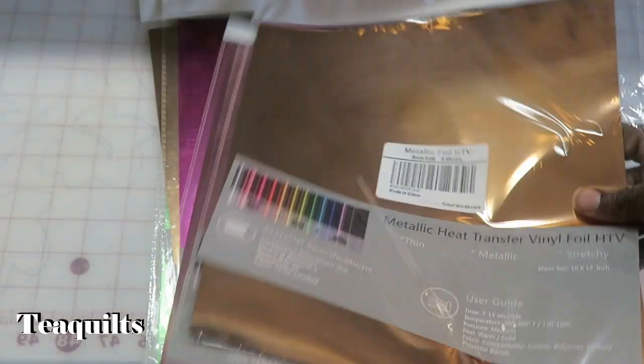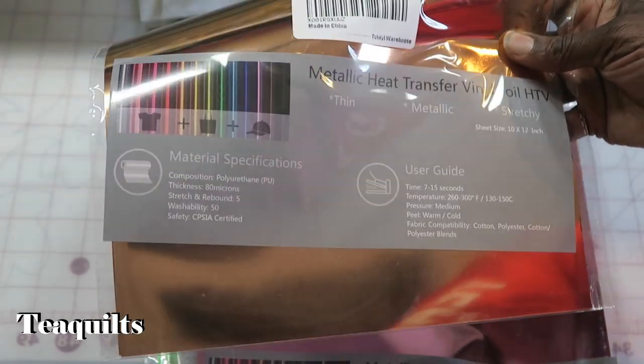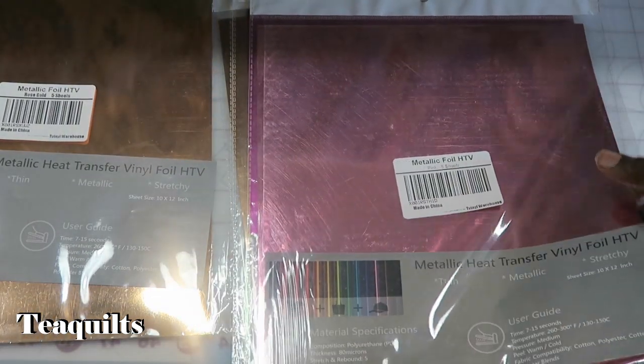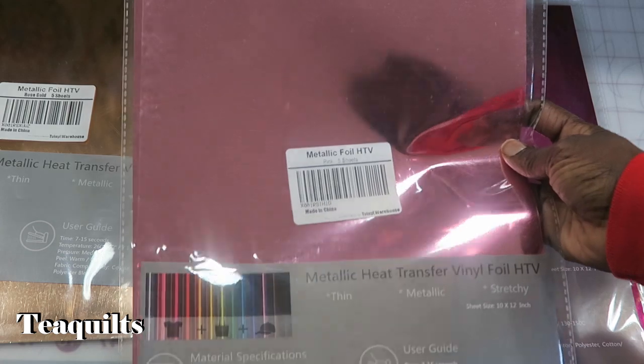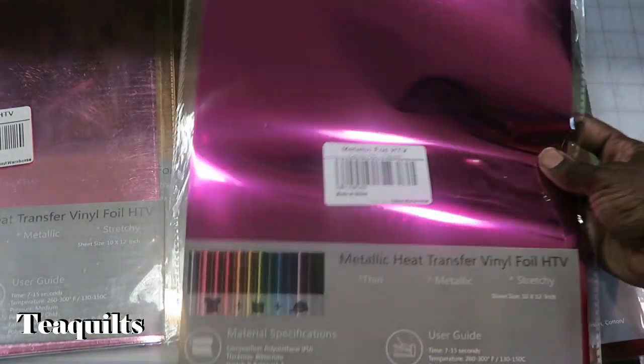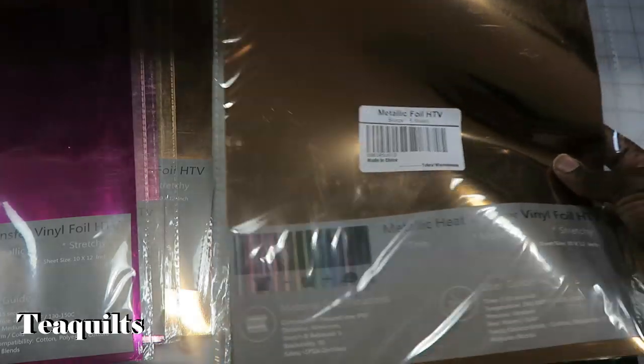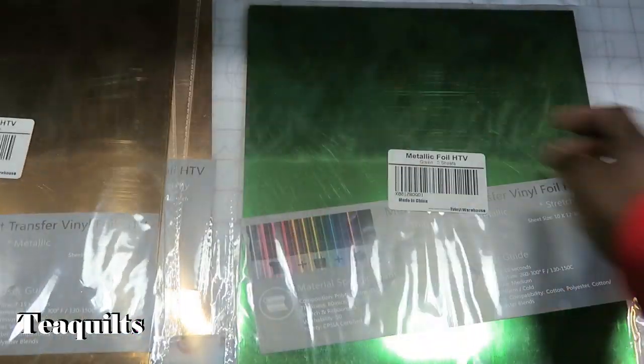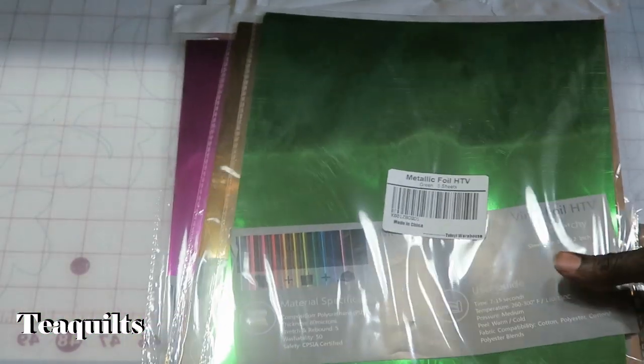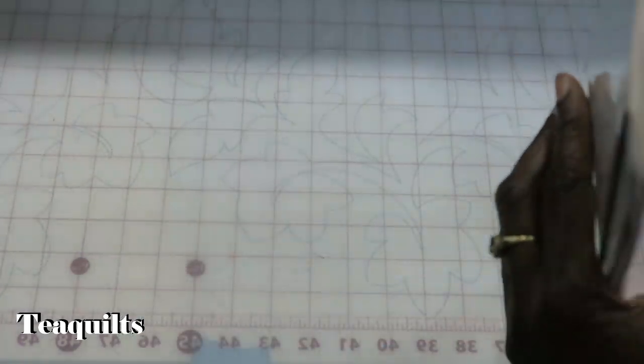So I've got this stretchy vinyl in rose gold which is this color here. Got it in pink, also in fuchsia pink, this is bronze, and then I also have it in green. And I tend to buy this from Amazon whenever I'm looking for different colors that I can't find in my regular brands that I like to use.